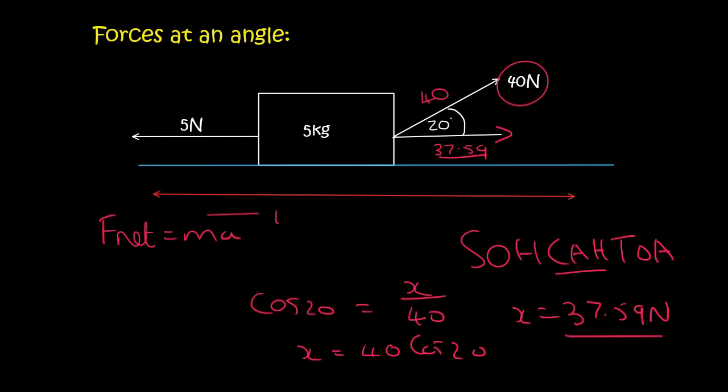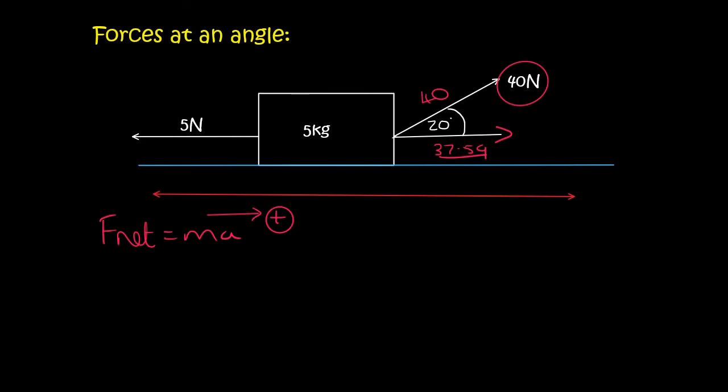So the easiest one would be to choose the right is positive and so F net remember that's like your business profit so to the right you've got 37.59 to the left you've got 5.